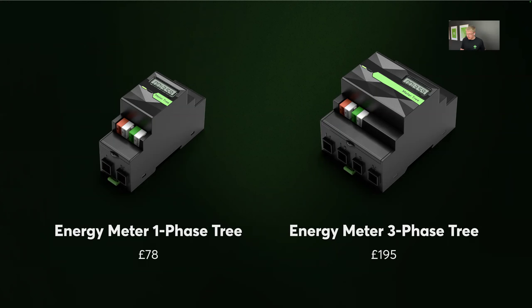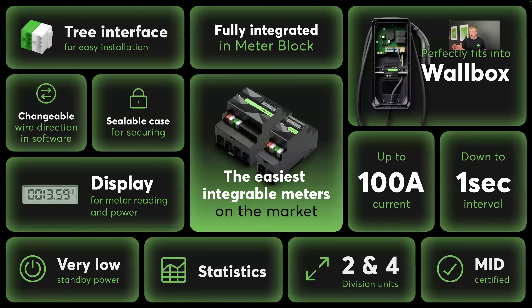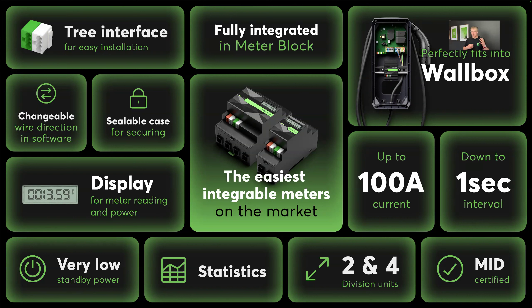The Meter Tree costs £78 for the single-phase variant and £195 for the three-phase variant. Compared to alternatives requiring additional Modbus extensions, it's excellent value. On the question of separate import and export readings — yes, all this information is provided automatically, fully integrated with the meter function blocks. You get specific readings for import, export, and live power, as well as frequency, voltage, and all other expected inputs.